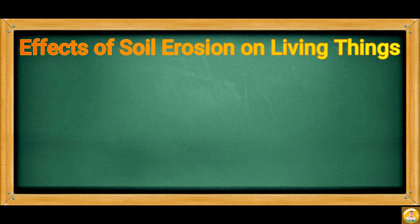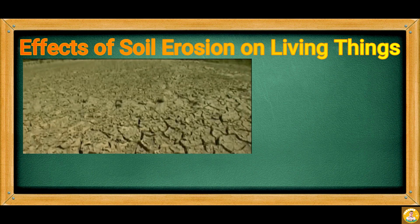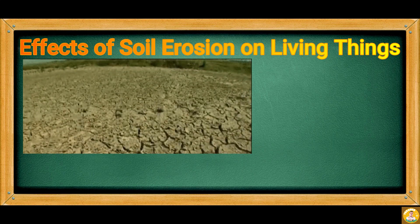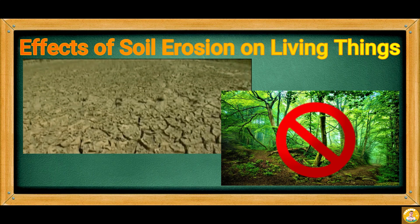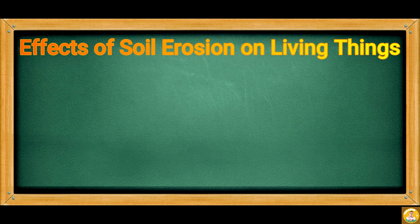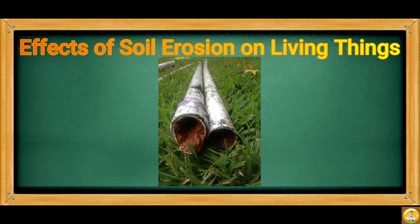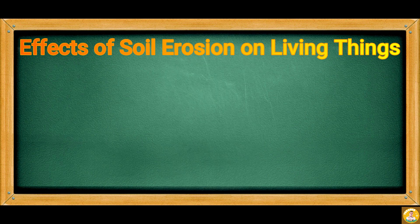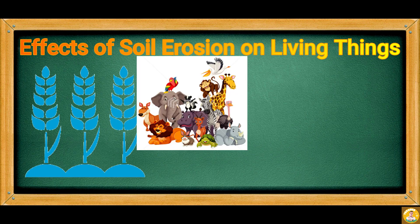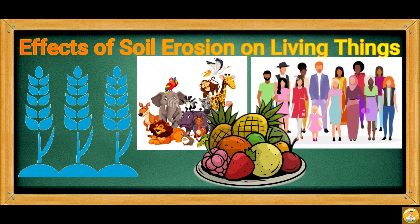Too much soil erosion makes the soil unable to hold or absorb water, making it dry, coarse, and eventually unfit for vegetation. In addition, sediments washed away by water can clog irrigation systems and further inhibit the plant's water supply. The effect of erosion on plants means less food production, which can affect animals and humans since plants are the main source of food and nutrients.